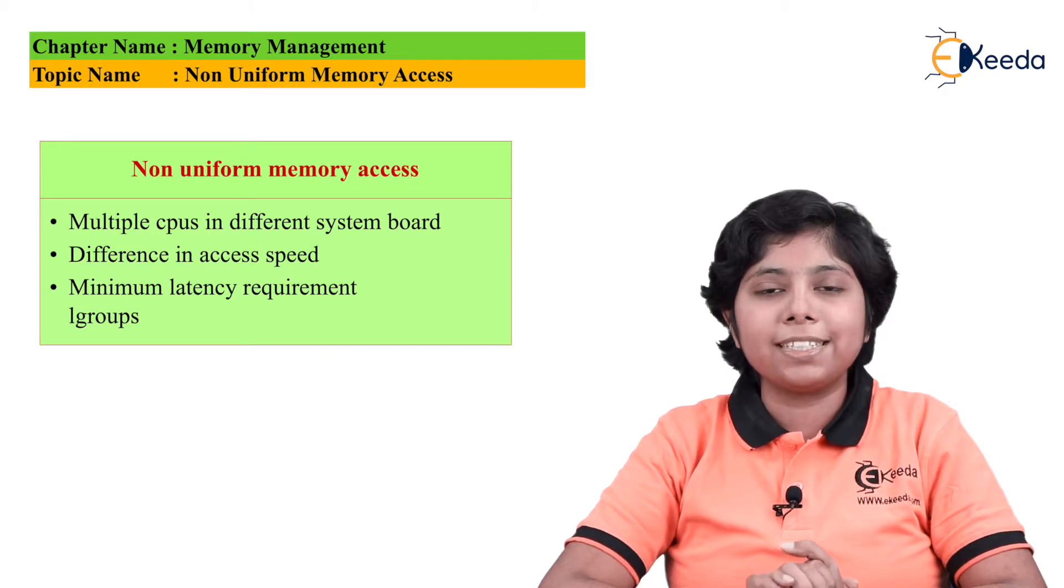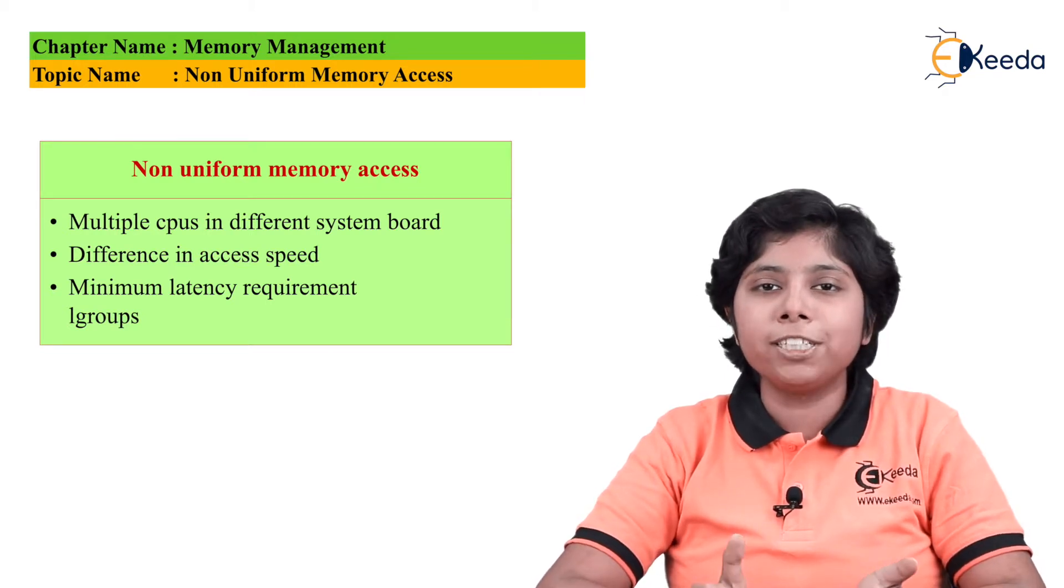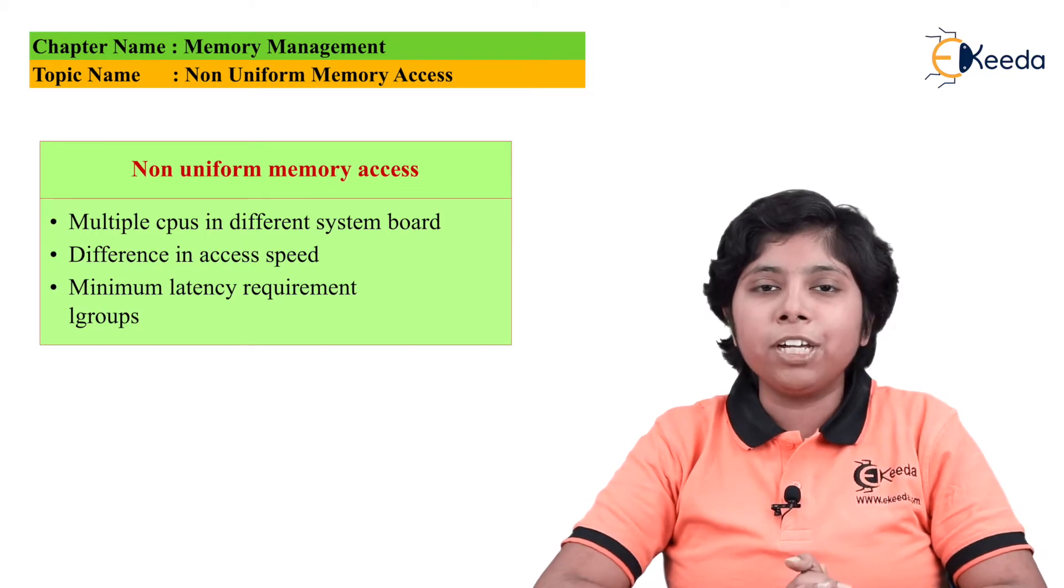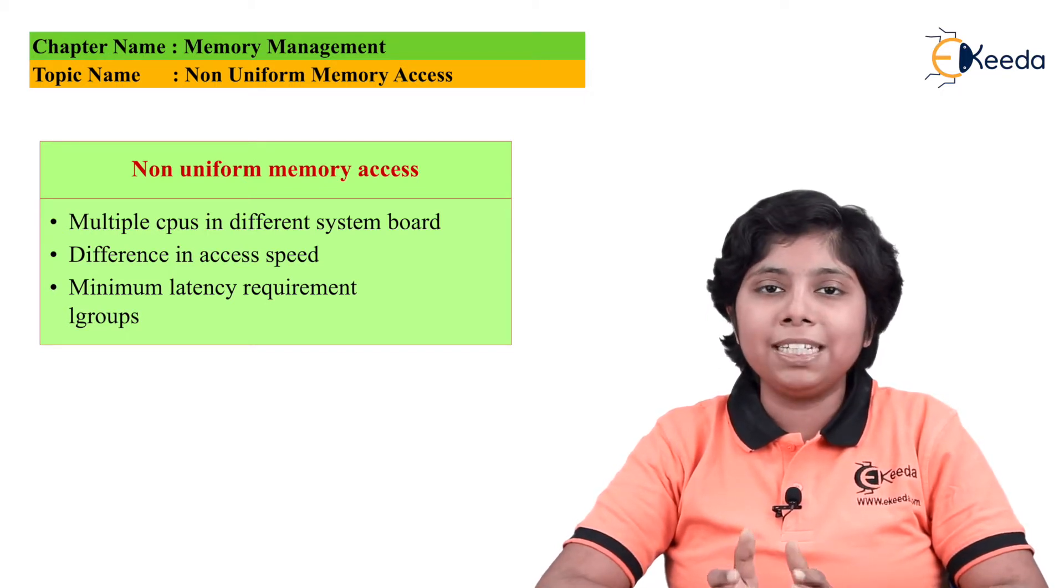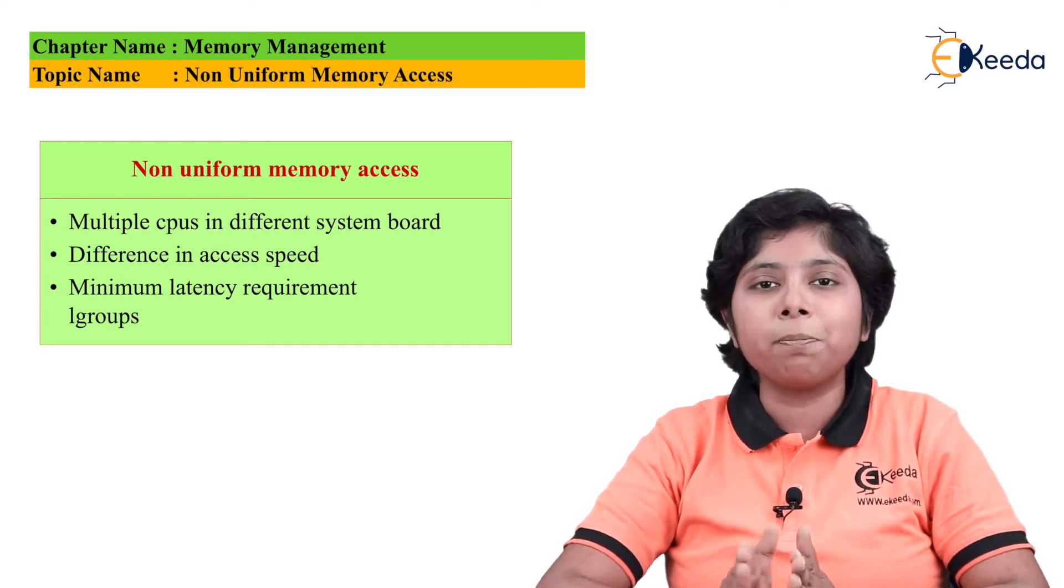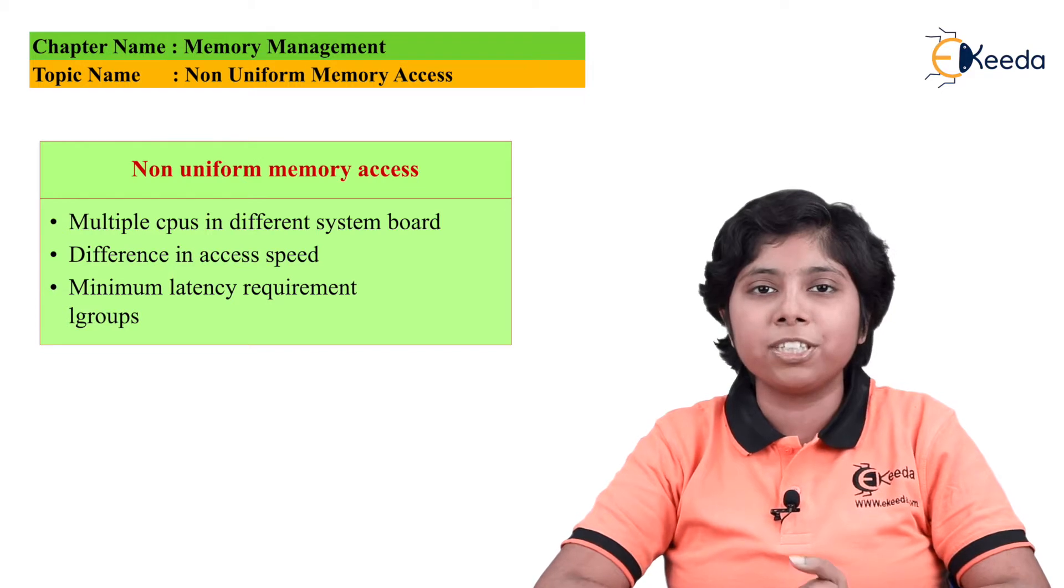Now the allocation of paging frames inside this non-uniform memory access can cause a significant effect on that particular system performance or CPU throughput.